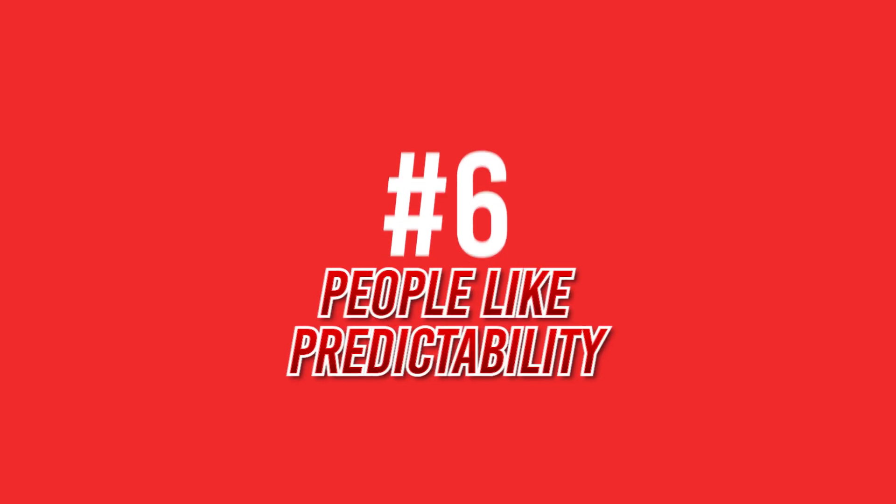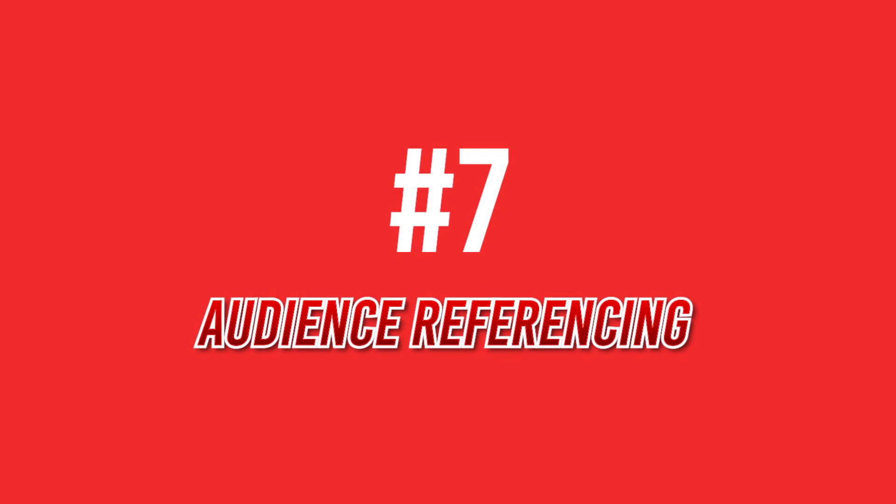Number six: use numbers. This includes lists like 'top seven,' but also timelines — again, people like expectations and predictability. Think of a plumber calling you saying 'I'll be there soon to fix your faucet' versus calling and saying 'I'll be there within 30 minutes.' Specific numbers set a clear, trustworthy expectation.